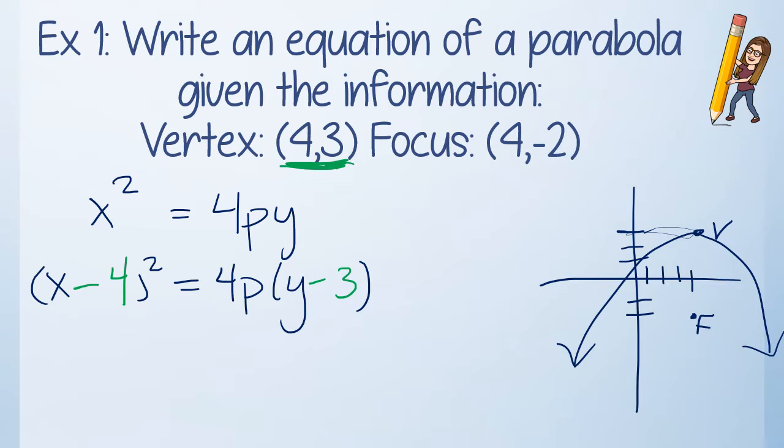Next, the focus is at 4, negative 2. So what I need to take a look at is the distance between my vertex to my focus. I have a distance of 3 and a distance of 2. So vertex to focus is 5 units. If you take a look, the distance between 3 and negative 2, the y distance would be 5. So however you figure that out, you're good to go.